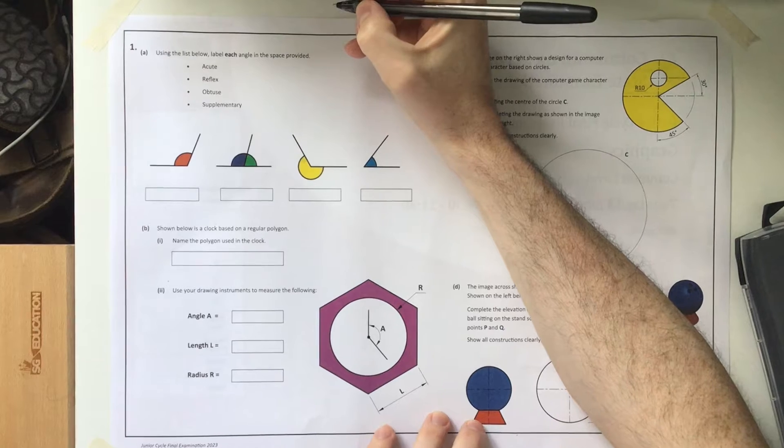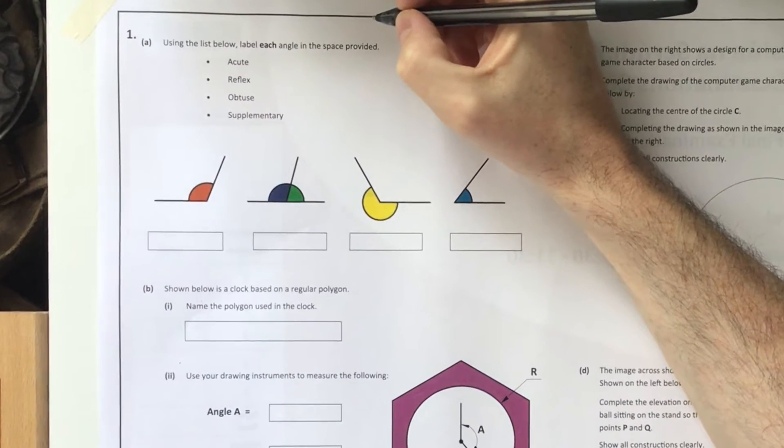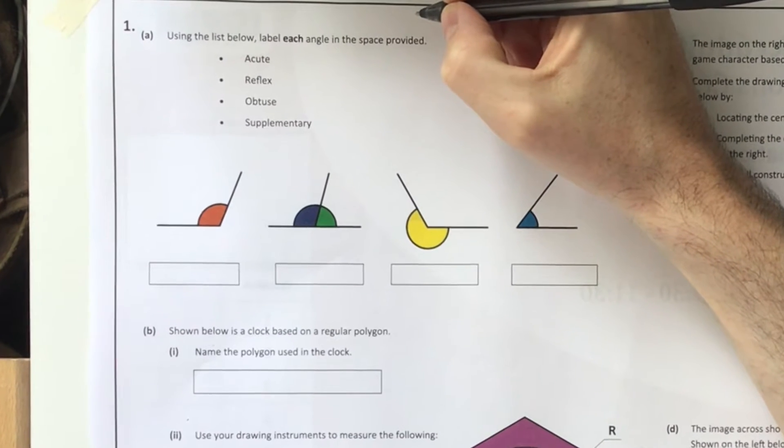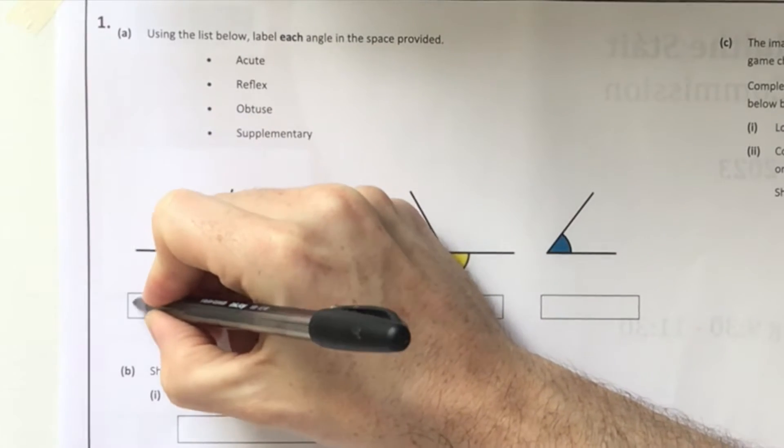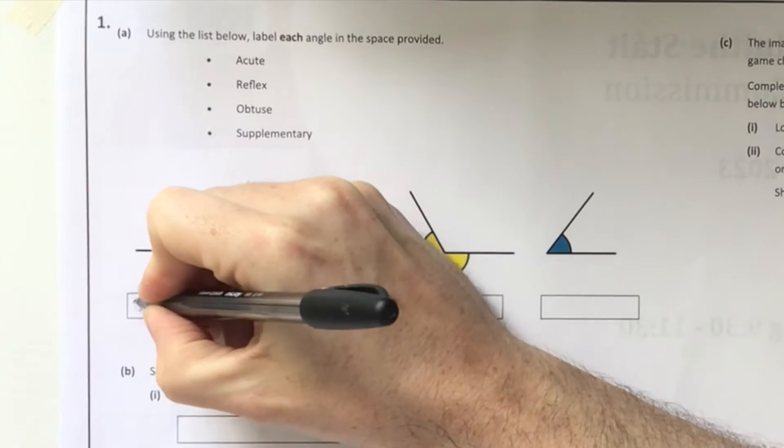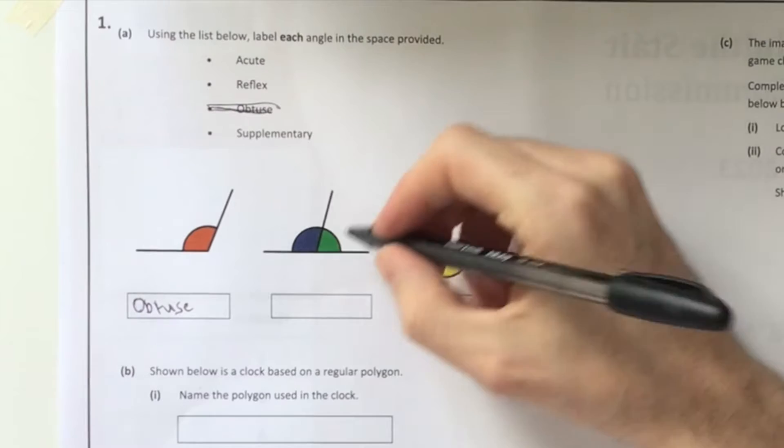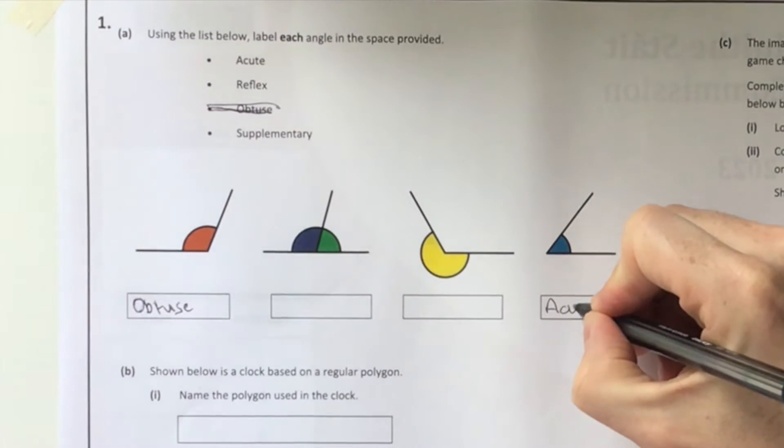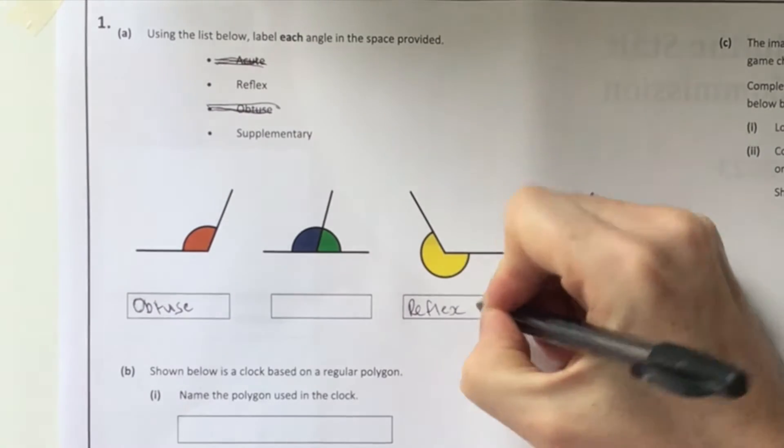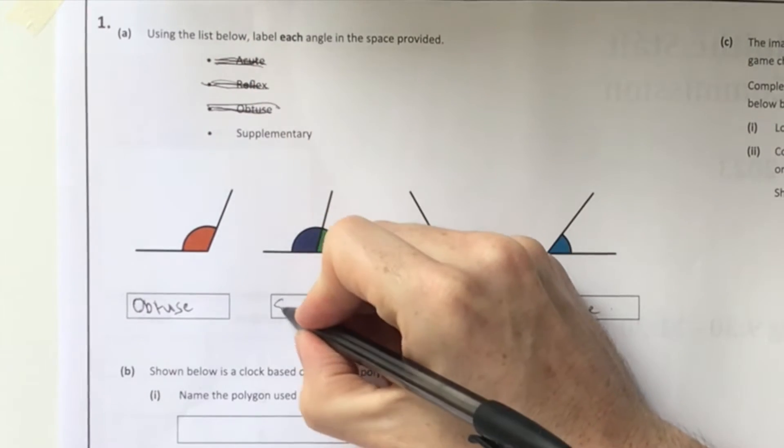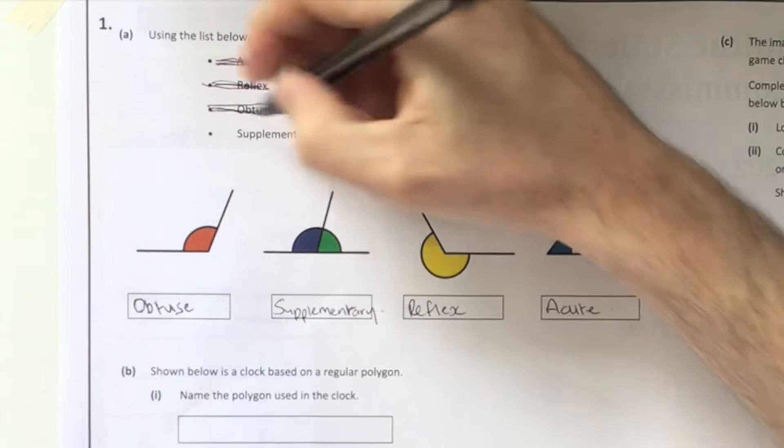Part 1a asks us to identify each angle shown using the list below: acute angle, reflex angle, obtuse angle, and supplementary angles. I know straight away the obtuse angle is the orange angle. When you have a list like this, scratch out the ones you've done to clear things up. Next is acute, then reflex, and supplementary angles are two angles together.